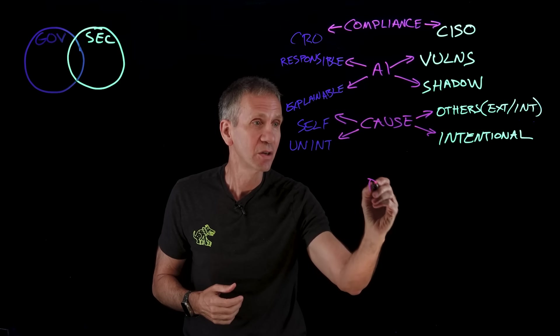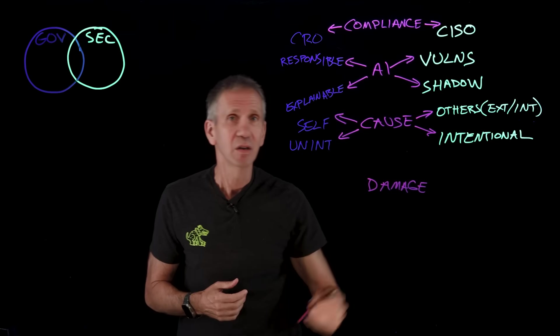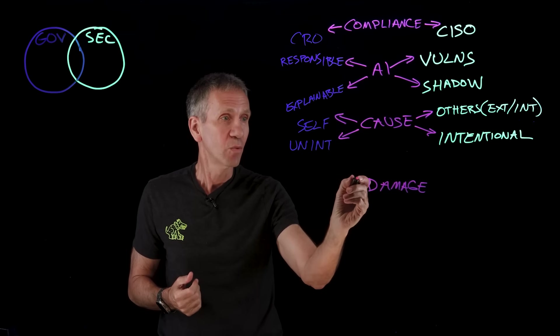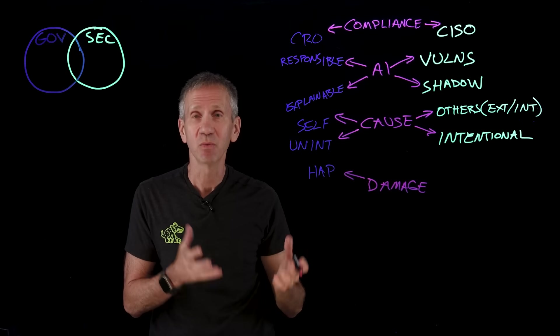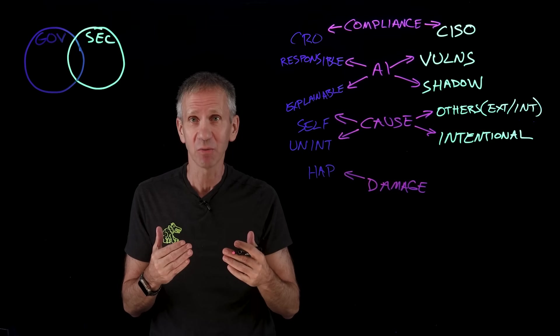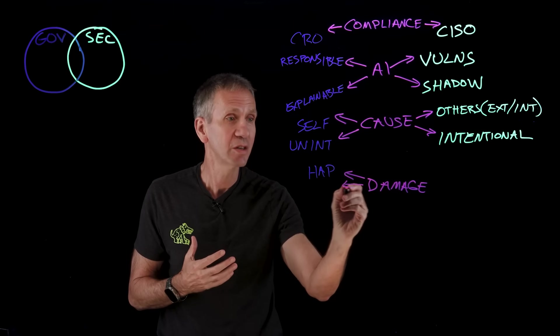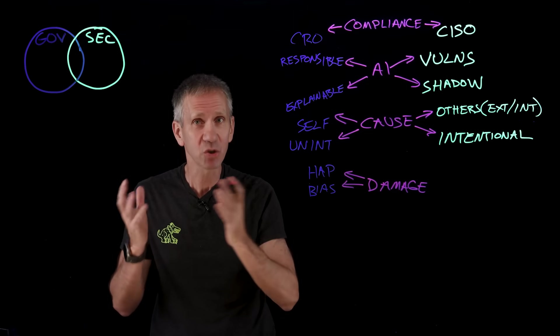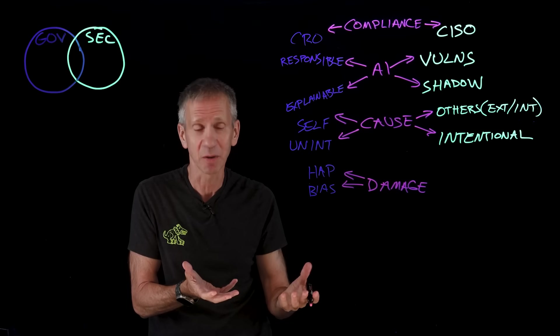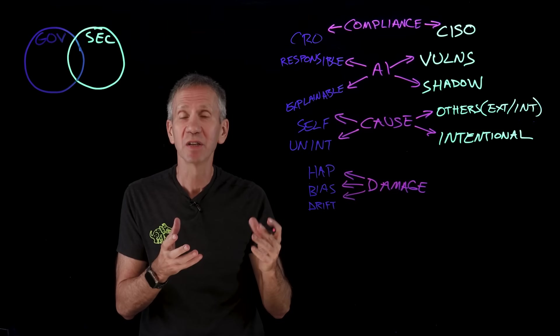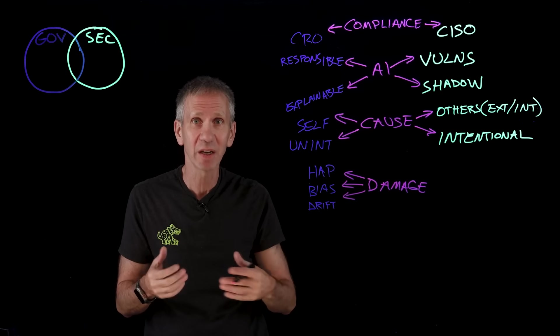From a governance standpoint, we're looking at things like HAP: hate, abuse, and profanity. We want to make sure that our system doesn't say really outrageous things that insult our users. We want to make sure that it is fair, it's unbiased, it doesn't bias toward or against any particular information or population. We want to make sure that the model doesn't drift.